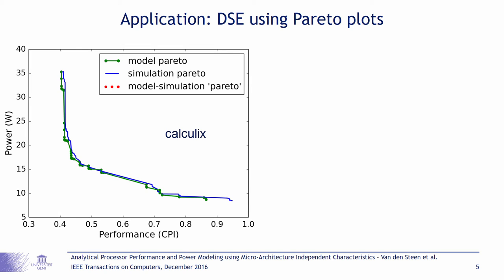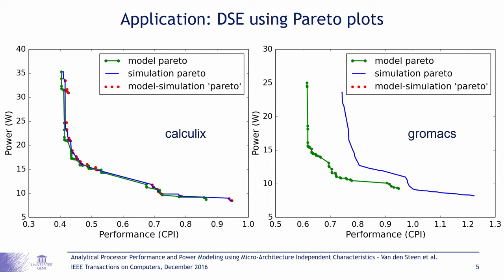The green curve is the Pareto front built up with the model predictions and the blue curve is the one built up using cycle level accurate simulation. The red dots are the designs which the analytical models predict to be Pareto optimal, but plotted with the performance and power taken from detailed simulation. The red points show that we correctly predict the designs that are Pareto optimal or close to Pareto optimal. The next Pareto plot is for the Gromax benchmark. Here we immediately see that the green and blue curve are far apart, due to the absolute error on the model predictions. However, if we look at the red points, we can confirm that the designs we predict to be Pareto optimal are indeed Pareto optimal. This shows the most important feature of our model: its relative accuracy. Despite the absolute error for some benchmarks, it can track performance and power changes of different processor architectures correctly.